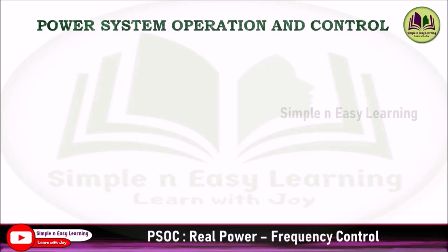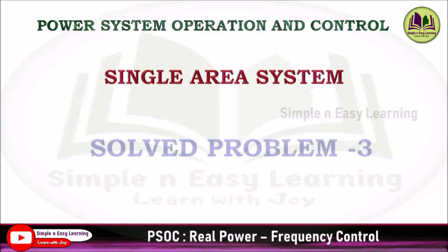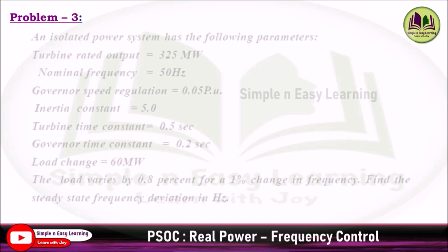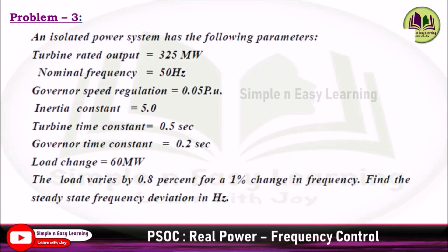Power system operation and control in real power frequency control in a single area system, solved problem 3. An isolated power system has the following parameters: turbine rated output is 325 megawatt, nominal frequency 50 hertz, governor speed regulation 0.05 per unit.